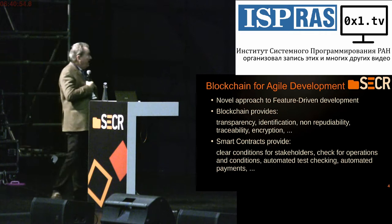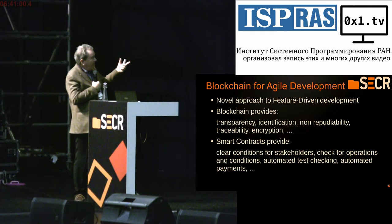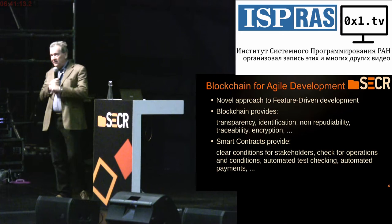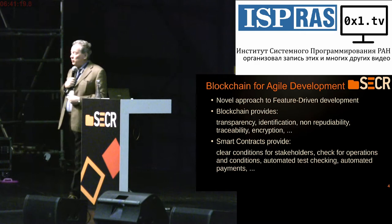Smart contracts are small programs that can provide clear conditions for stakeholders. They can check operations and conditions, can perform automated test checking, and also perform automated payments. If the developers agree to be paid in Ethers — a cryptocurrency associated with Ethereum — everything can be made automatically, even the payment.